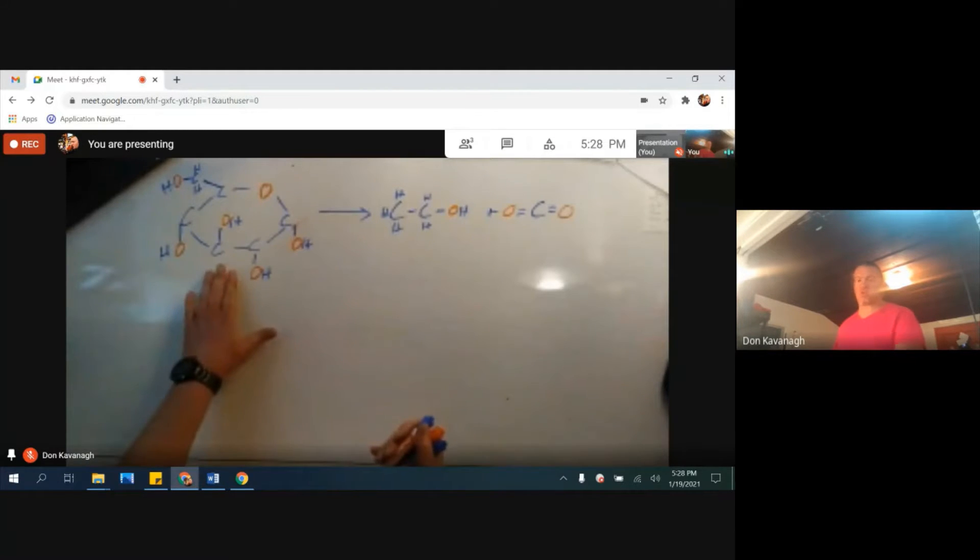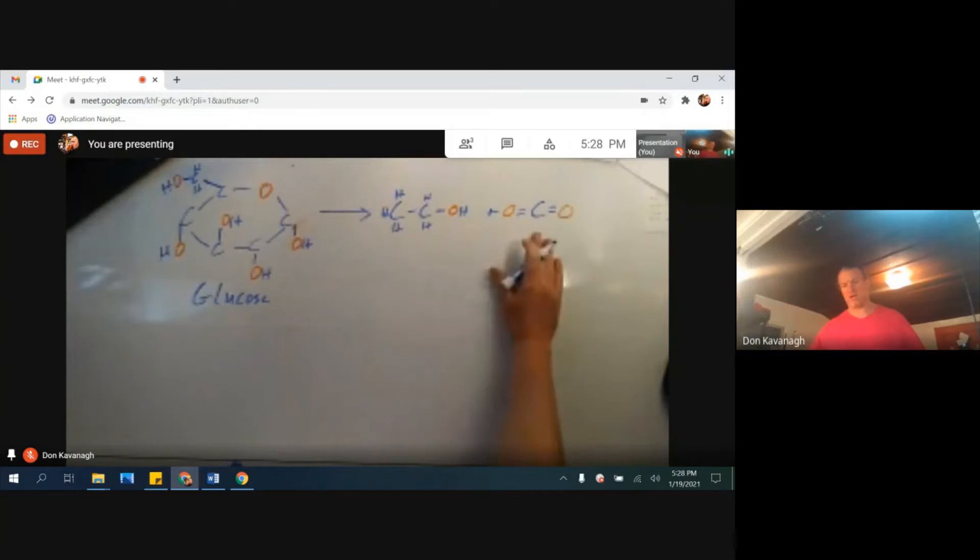This is structurally accurate, but it's meant to be a picture of glucose, a simple sugar, doing fermentation in the presence of yeast to produce ethanol and carbon dioxide.